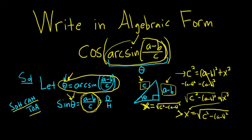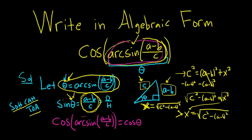The very last step is to rewrite the question. So we have cosine of arc sine of A minus B over C. Well, that's the same thing as cosine of theta, right? Because we said that this inside piece here, this beast here, this inside piece, this creature is theta. And then SOHCAHTOA.